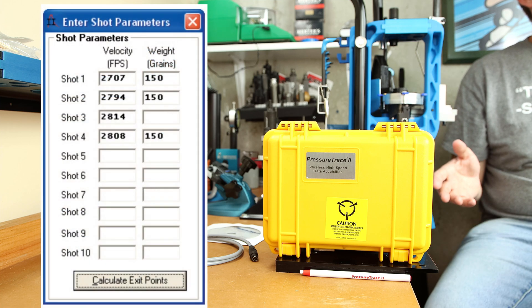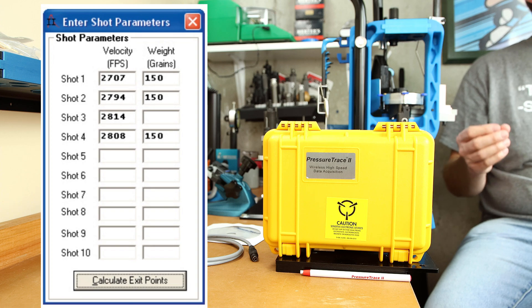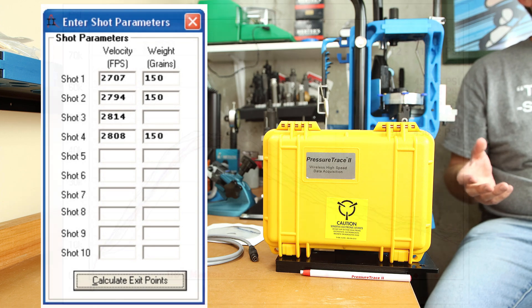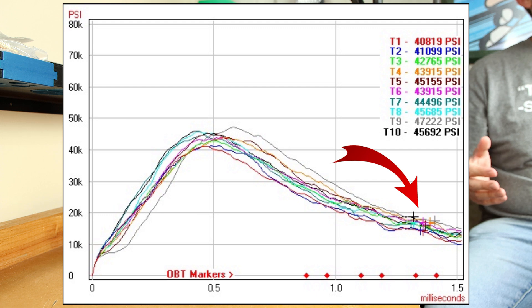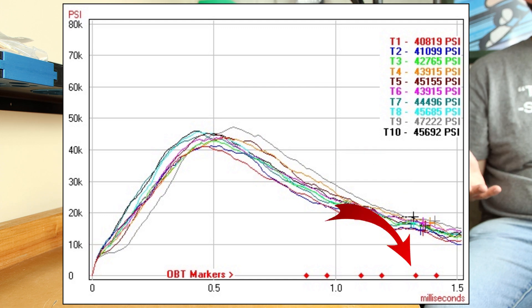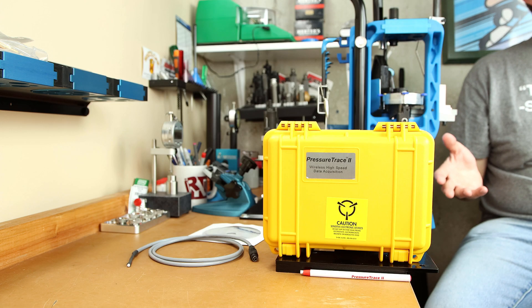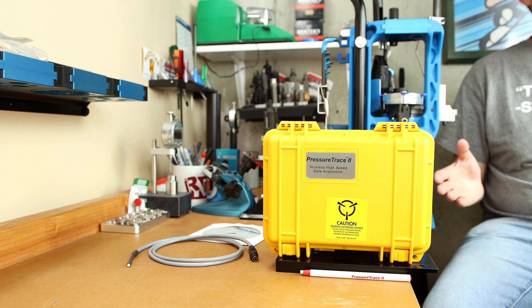Another feature of the software that comes with it, is if you enter your measured velocities into the program, it will calculate where your exit points are in comparison with optimum barrel time data. So it's there if you're interested in it. Personally, I haven't made my mind up on exactly how important that feature is.